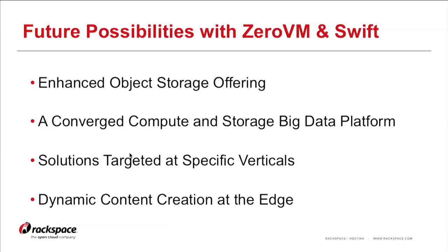We're also looking at targeting solutions at specific verticals. The media and entertainment space has many use cases around rendering and transcoding. The big data space — especially Scientific Python — has a lot of applicable use cases. And there's the idea of using ZeroVM to push dynamic content creation to the edge, so instead of just CDNing static content, you can push dynamic content out to edge locations for applications where that performance makes sense.